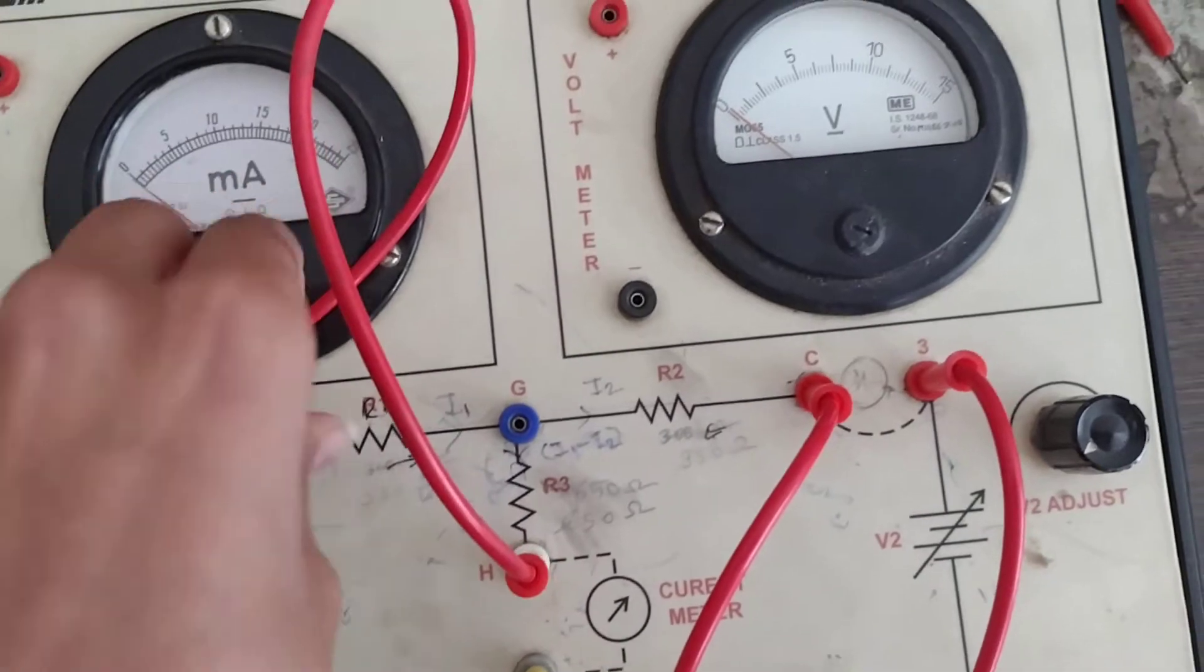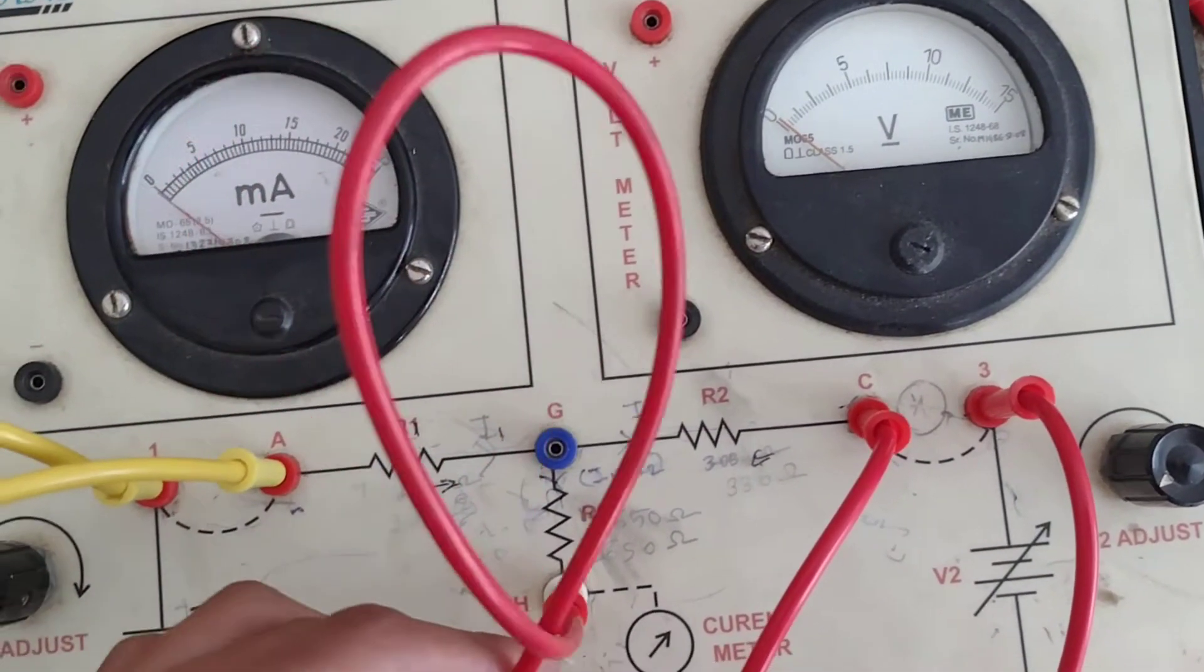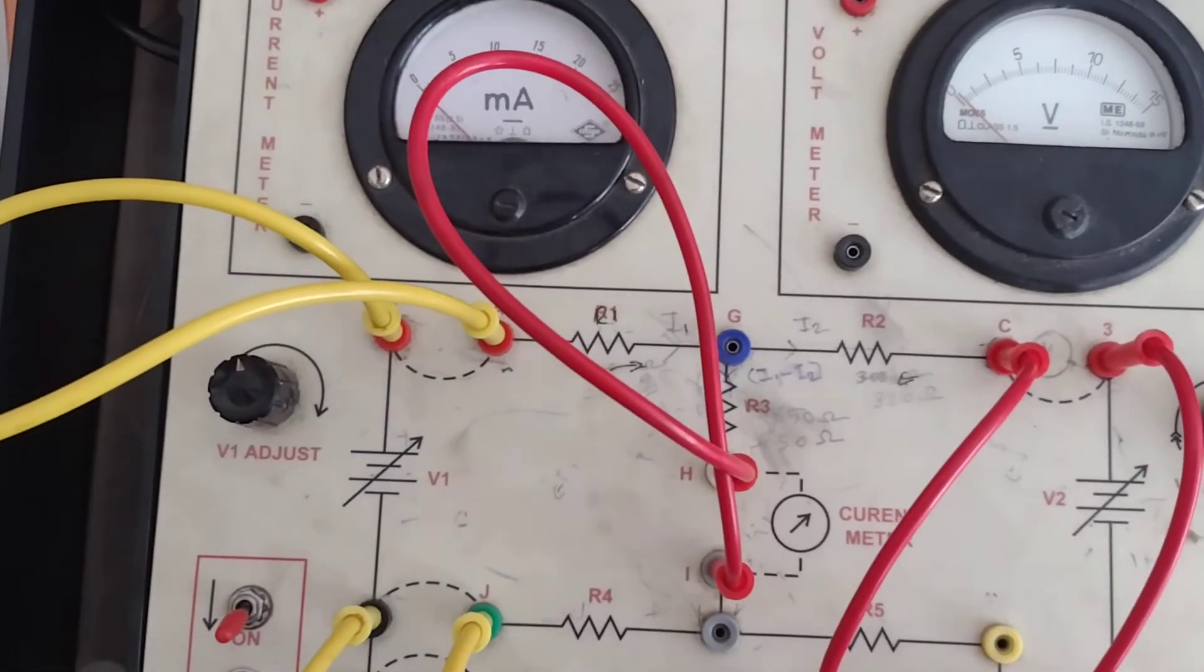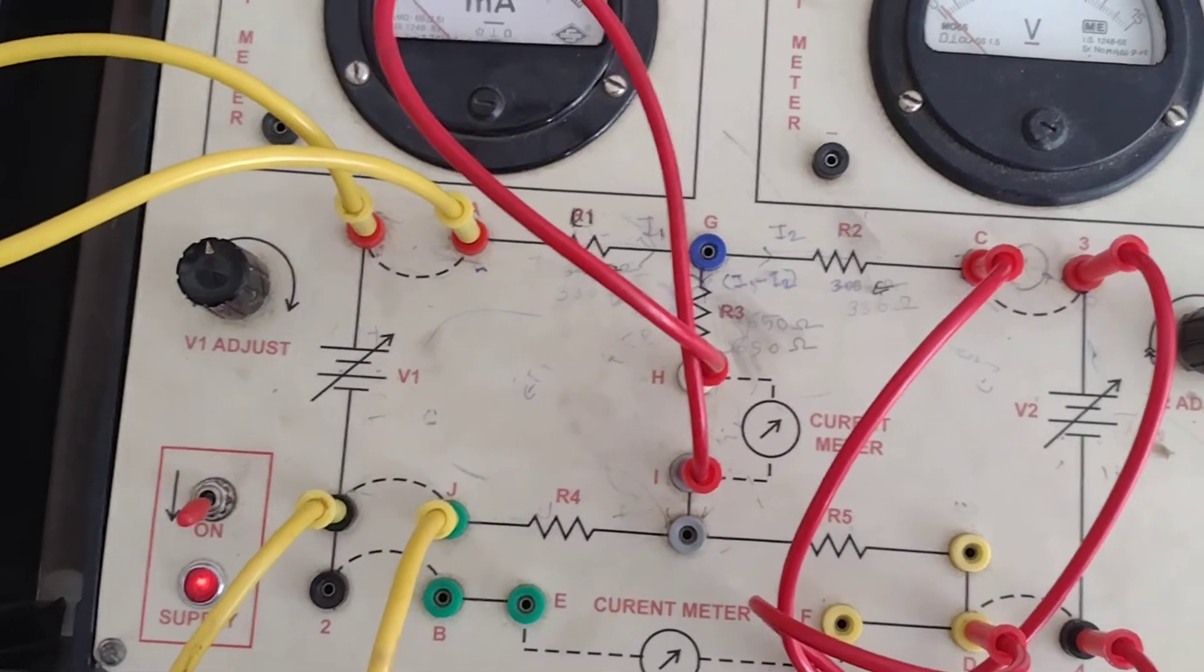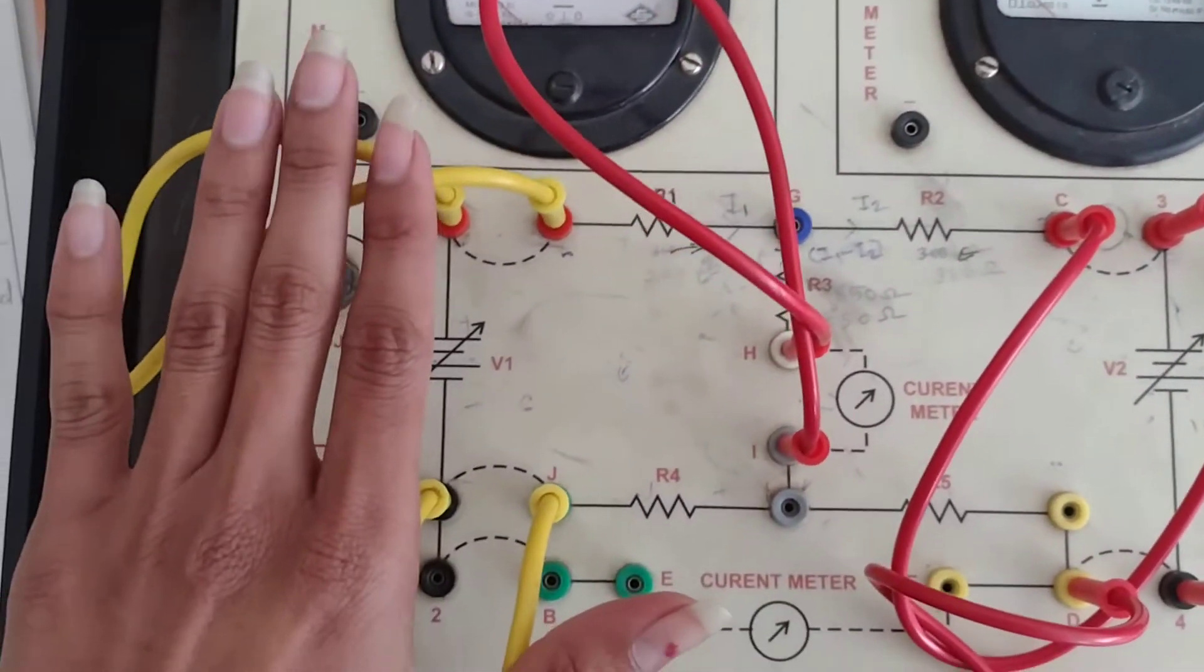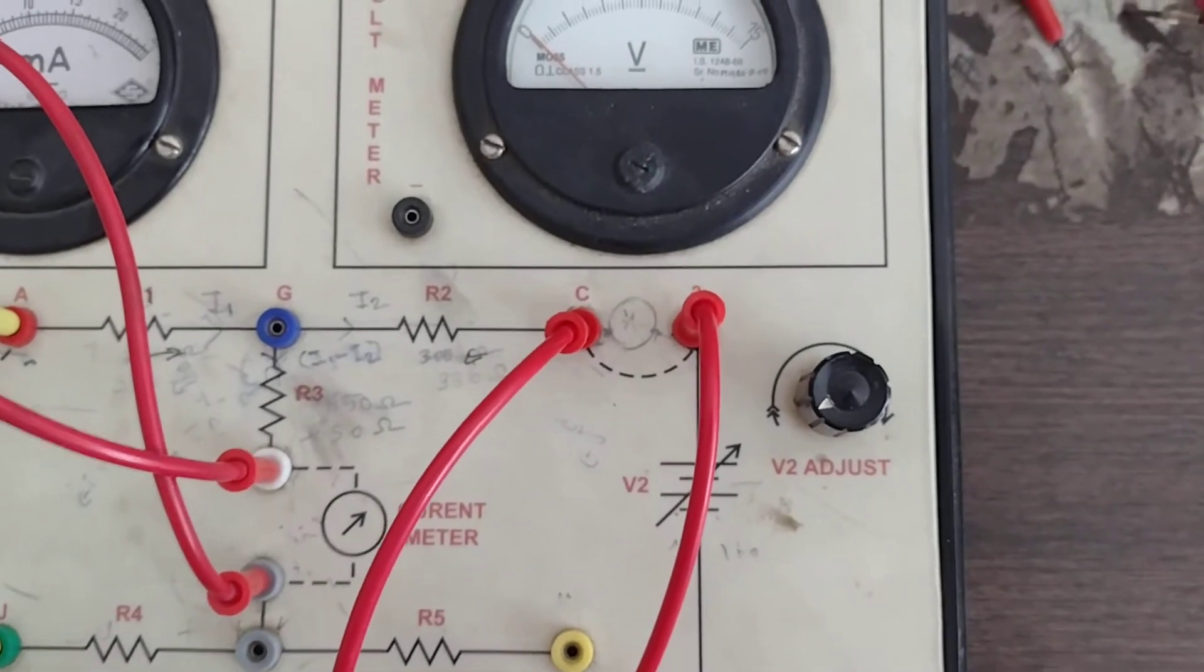After that, what do we do? When we have both V1 and V2 connected, we measured the current as IA. Now we need to connect only the V1 source and remove V2.